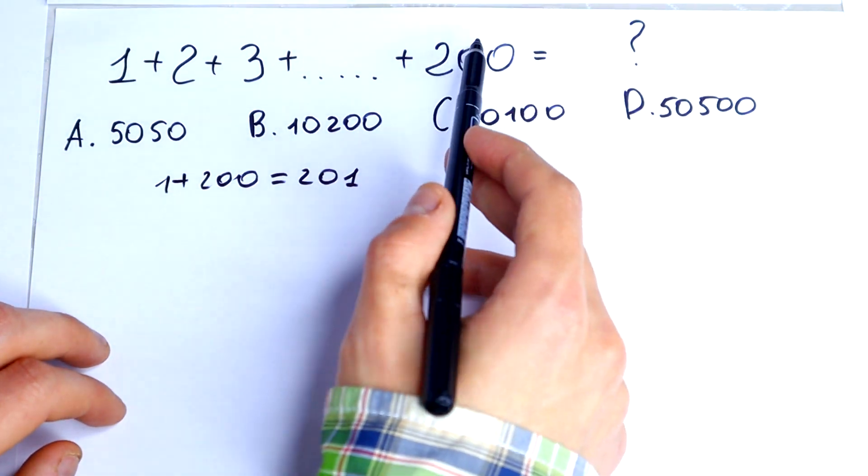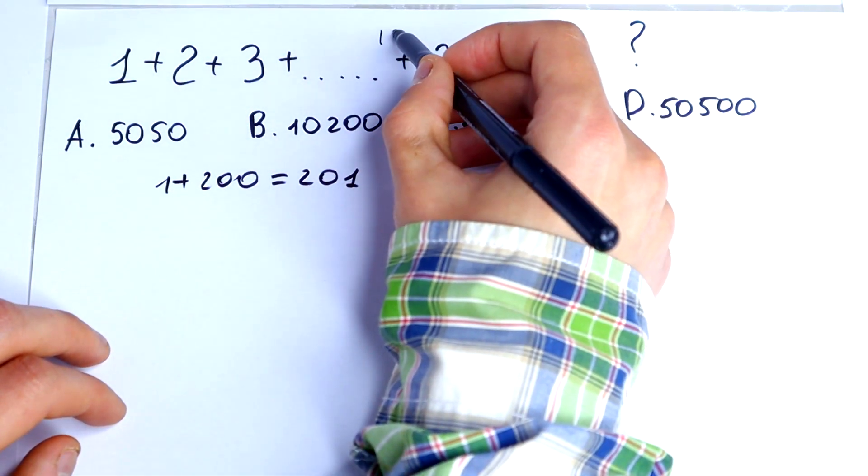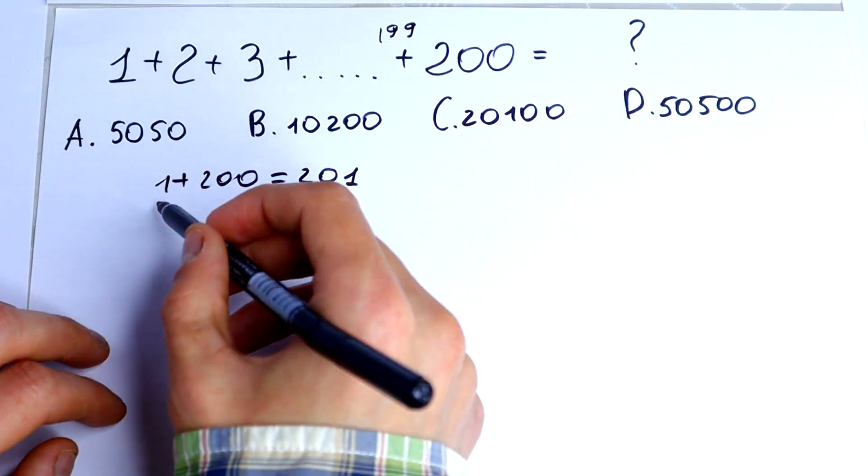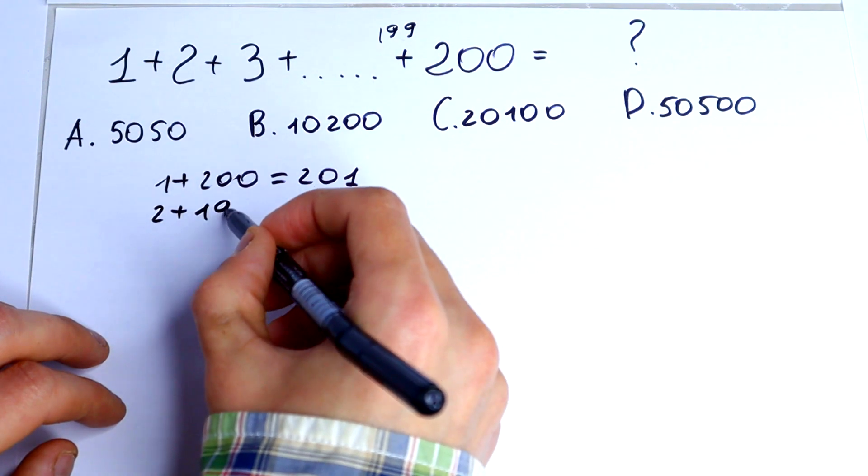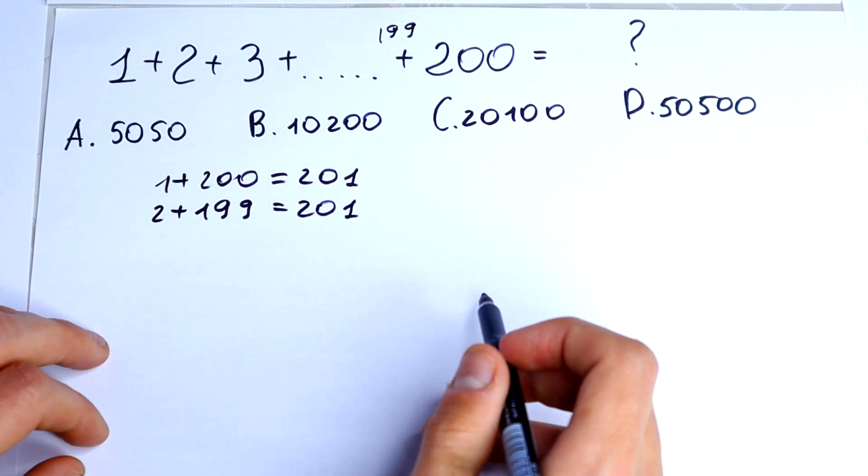The next, before 200, it would be 199. 2 plus 199, it would be equal to 201.